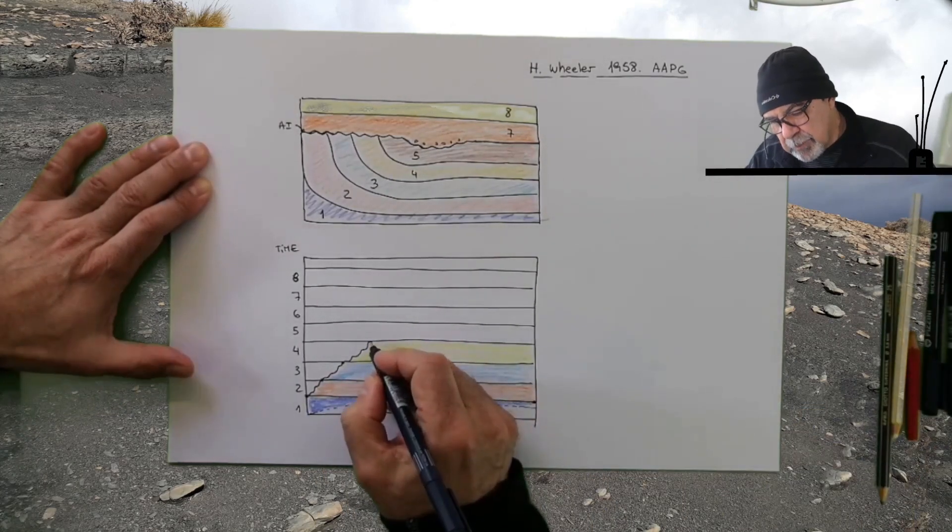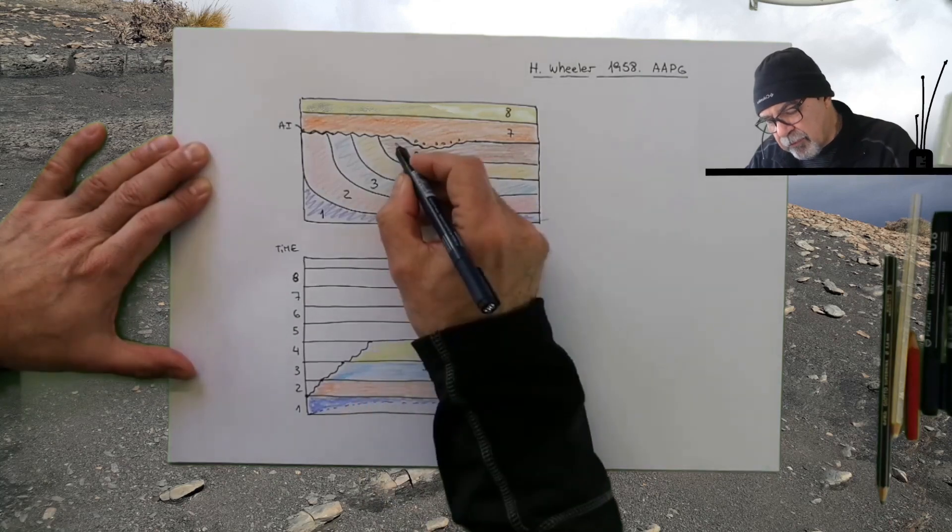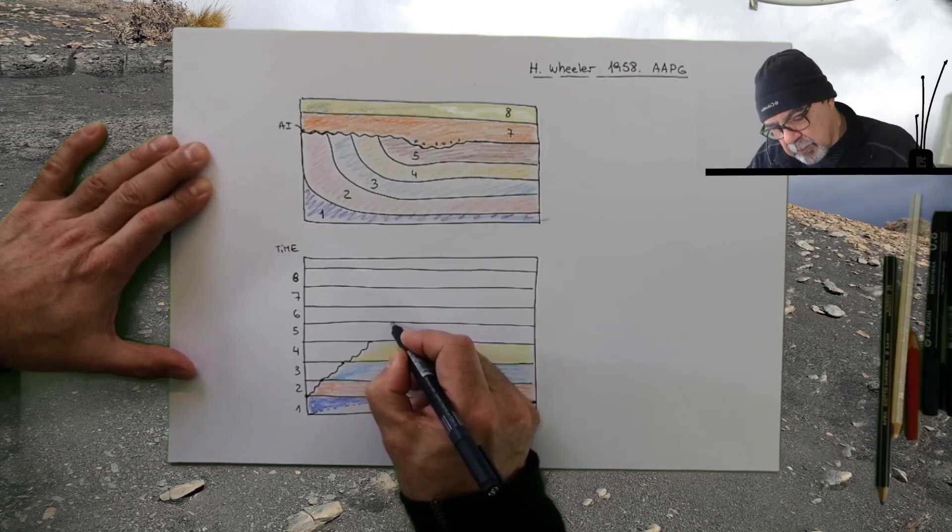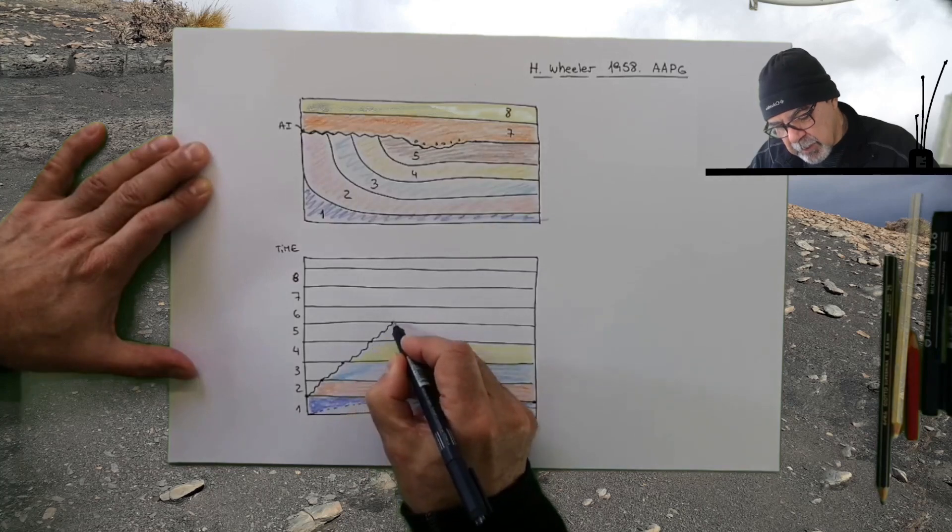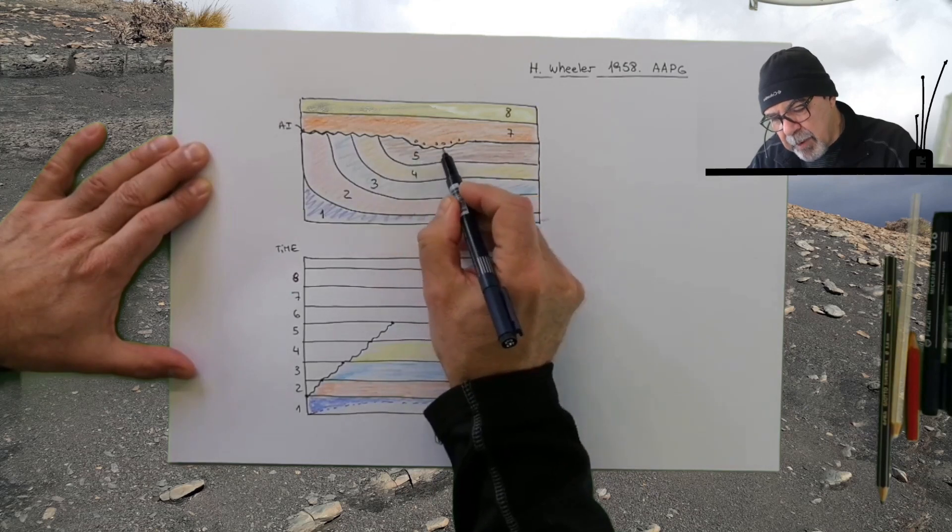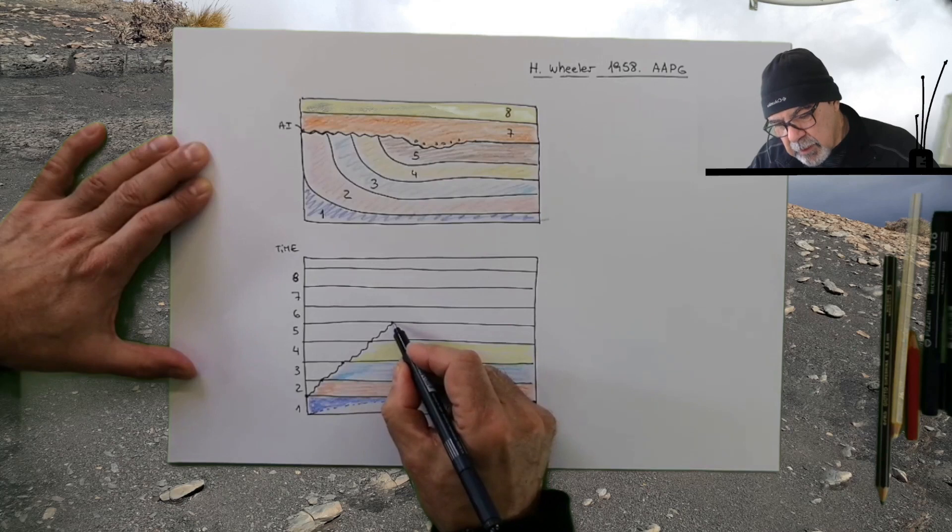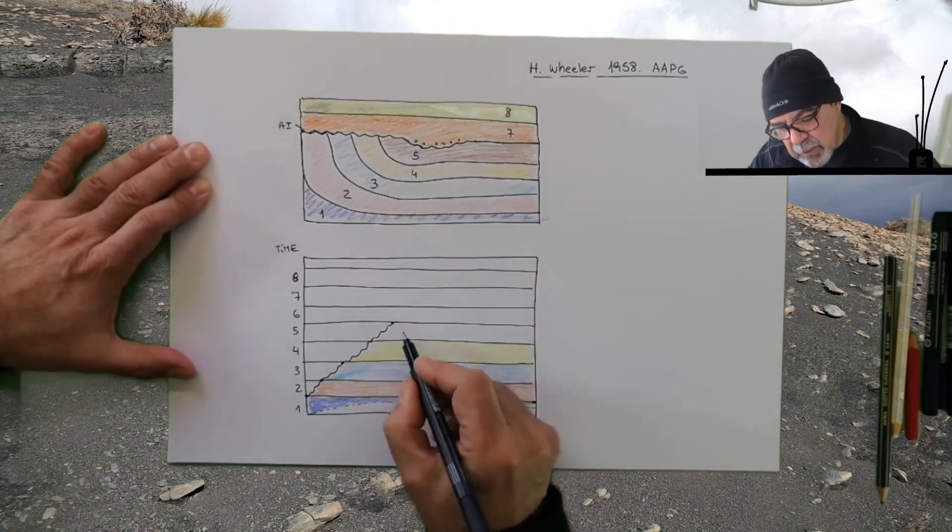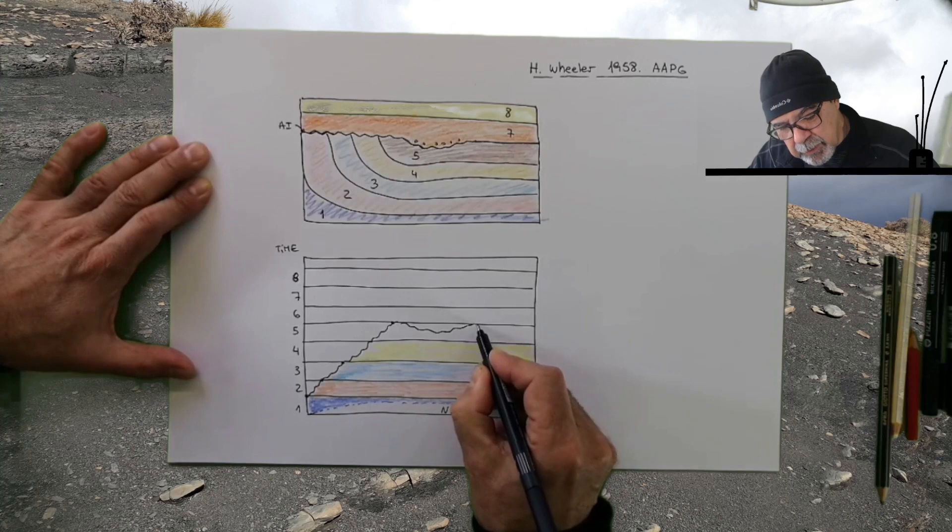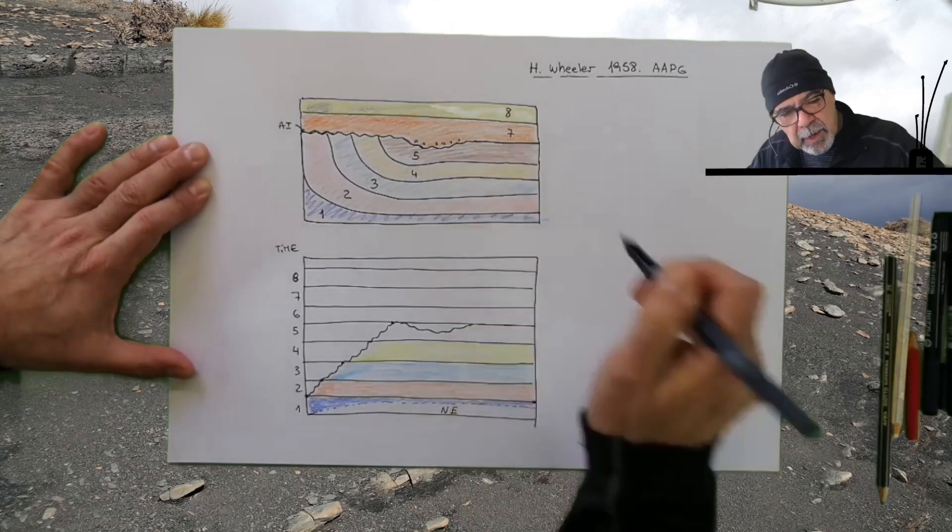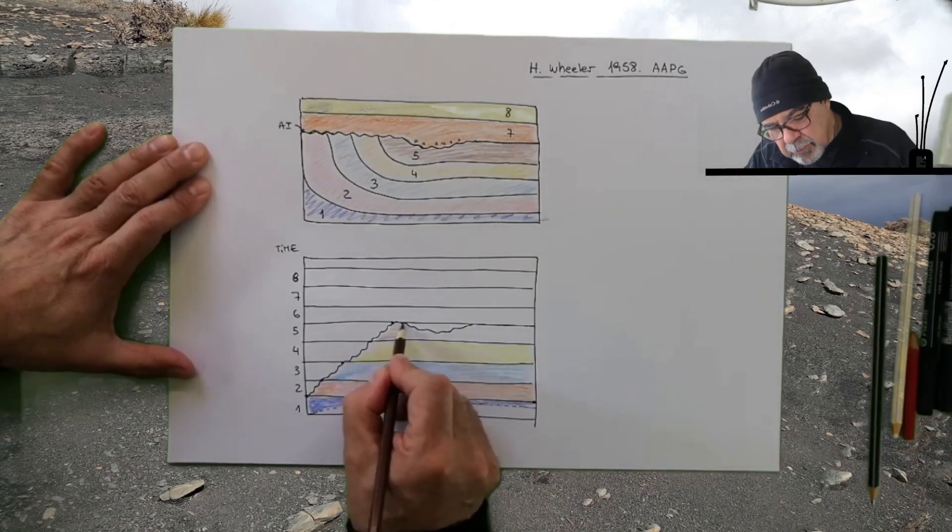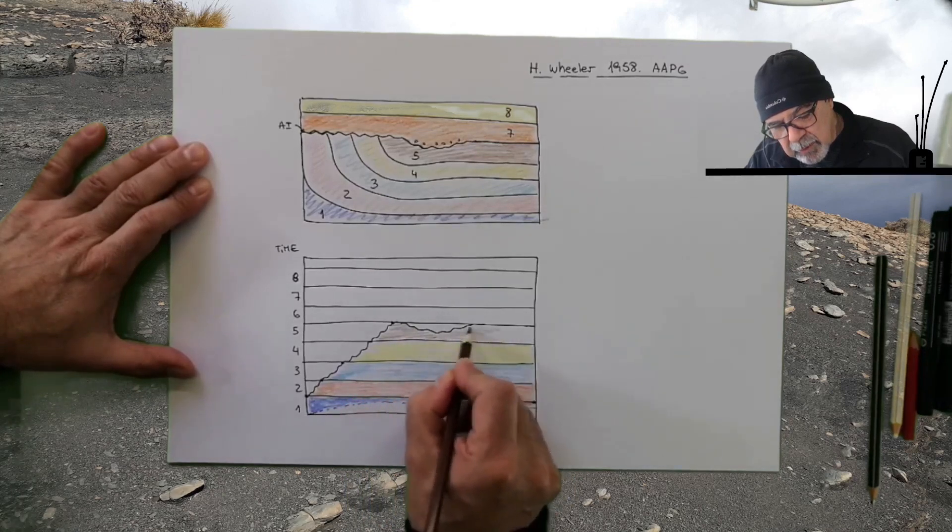Then with five it is very interesting because the top of five is somewhere here. The base of five is here. I can put the line here and after that we have some parts of the upper part of the five which is missing because of this disconformity. So I will put this erosion here up to this point in which we have not lacking time at the top of the five. So our five will be something like this.